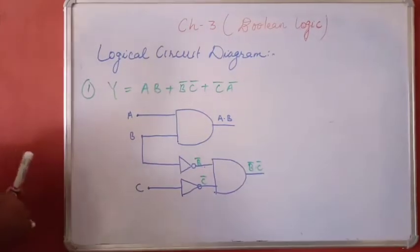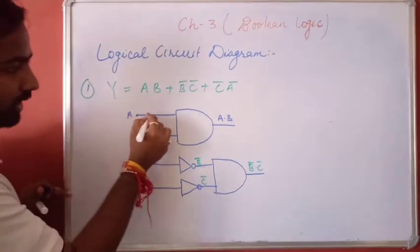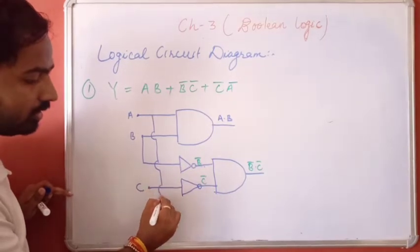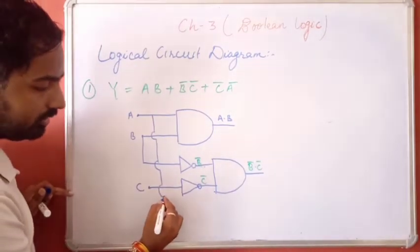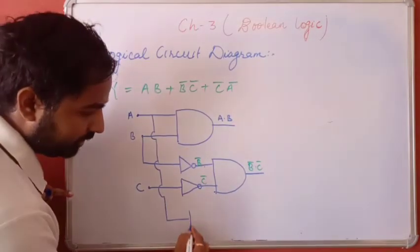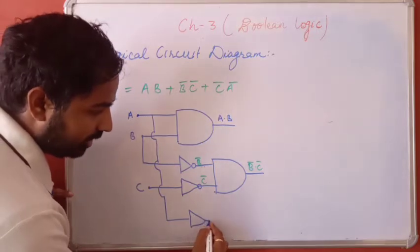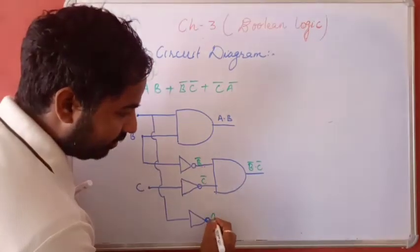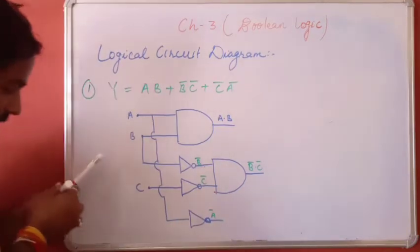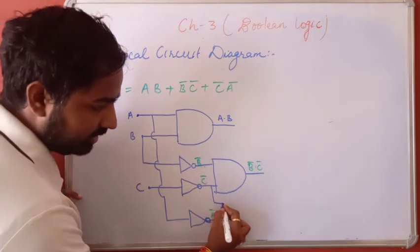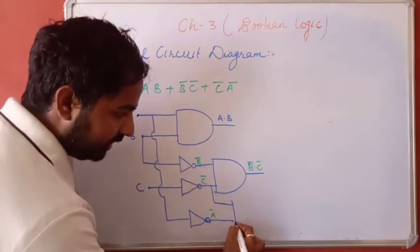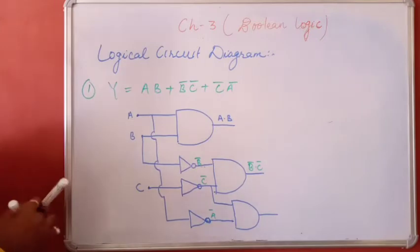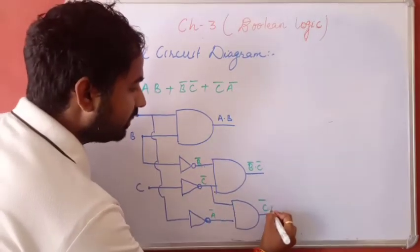Now for C̄Ā: from A, we implement a NOT gate, which represents Ā. This is C̄ — we can take it directly from the previous line. Between Ā and C̄, AND operation is there, so here AND operation is implemented. This represents C̄Ā.